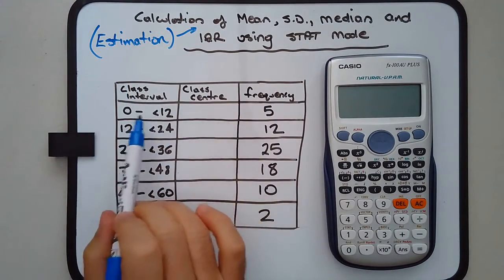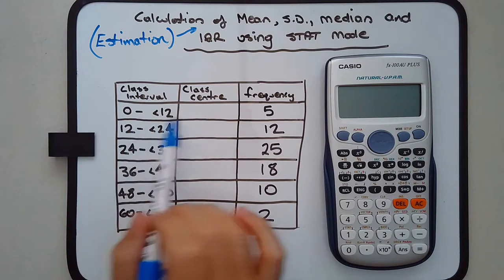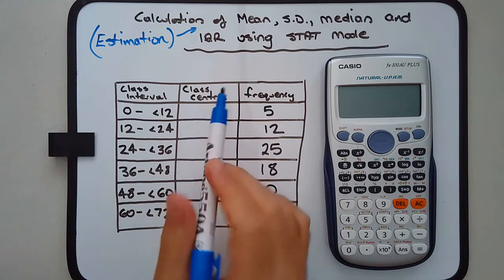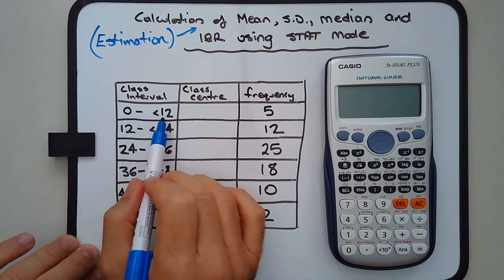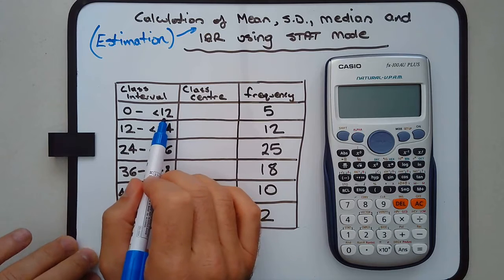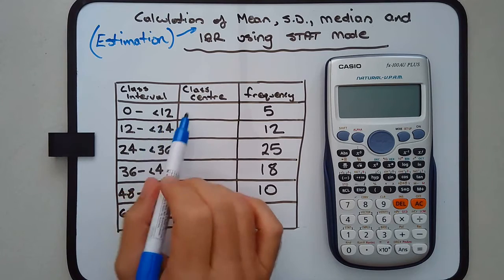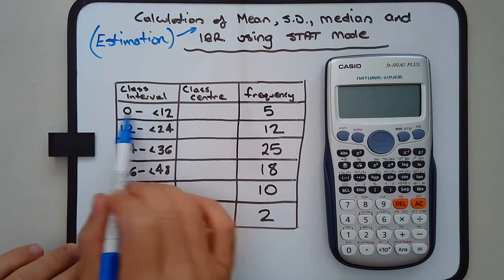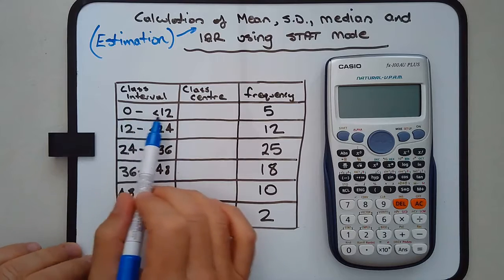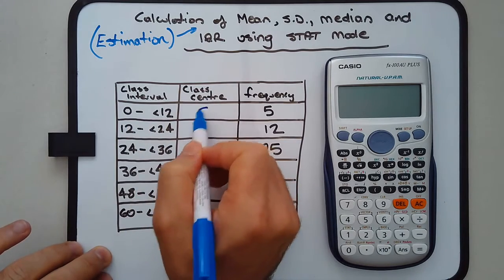The reason for that is because it's a class interval - we don't know exactly what the data is. We only have a midpoint. This is zero to under 12, so it could include 11.999 but cannot include 12. To work out the class center, it's just the mean of the two endpoints of each interval. So 0 and 12, the midpoint is 6.